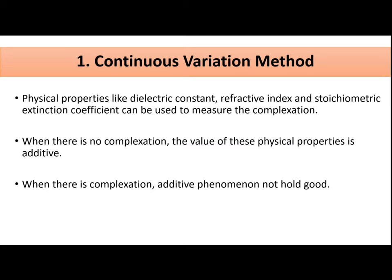Moving to the first method — the continuous variation method, also called the Job's method. This method uses physical properties such as dielectric constant, refractive index, or stoichiometric extinction coefficient to measure complexation. It states that when there is no complexation between two species A and B...